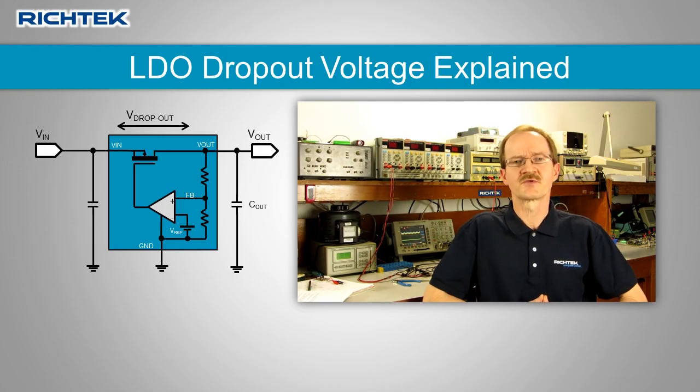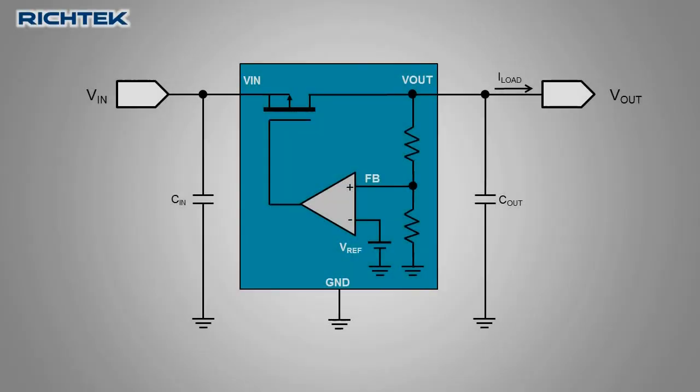Let's have a closer look at the LDO operation in relation to dropout voltage. Here is the basic circuit of an LDO with a p-channel MOSFET pass device. The MOSFET source is connected to VIN.